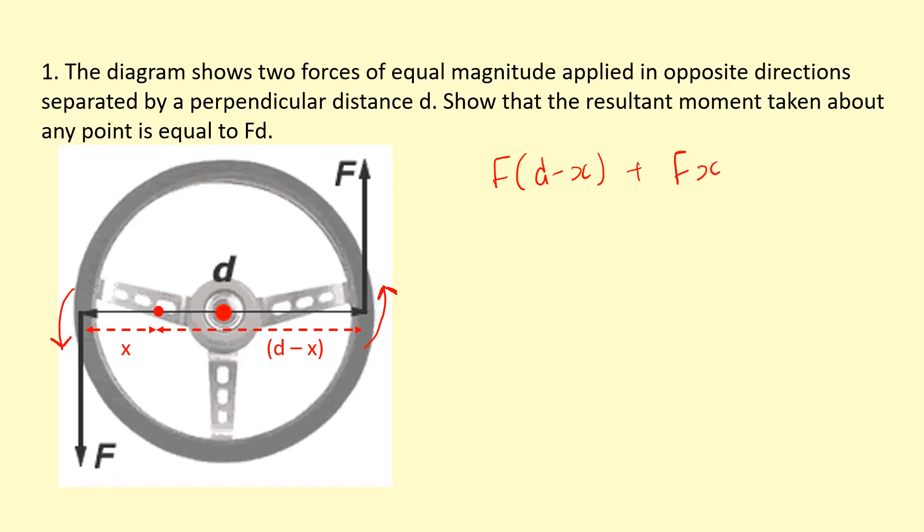I'm going to expand this bracket. So F times d minus Fx plus Fx. Hopefully you see these two cancel out. So that just gives us a total moment of F times d.